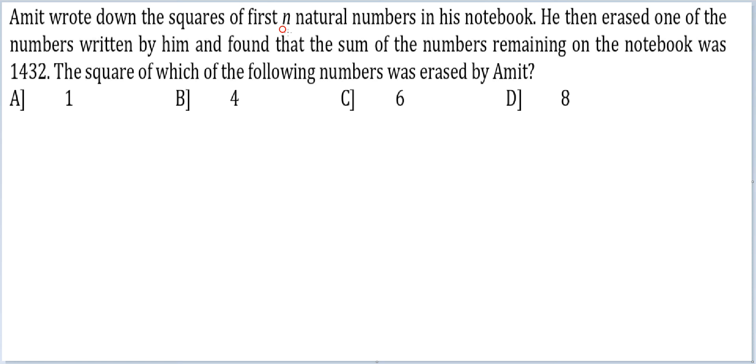So sum of squares of first n natural numbers is given by n into 2n plus 1 into 2n plus 1 by 6, and this sum is supposed to be more than 1432. So when you open up the bracket you would get 2n³ plus 3n² plus n is greater than 1432 into 6.